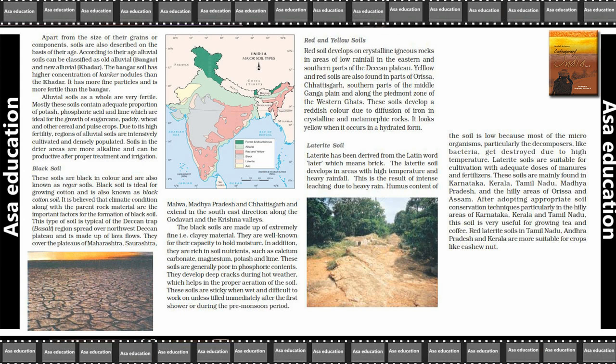Red soil is developed on crystalline igneous rocks in areas of low rainfall in the eastern and southern parts of the Deccan plateau. Yellow and red soils are also found in parts of Odisha, Chhattisgarh, southern parts of the middle Ganga plain, and along the piedmont zone of the western Ghats.